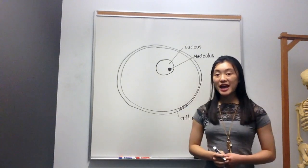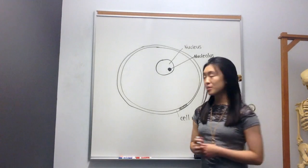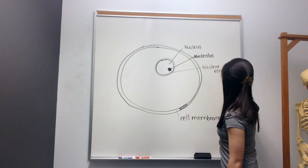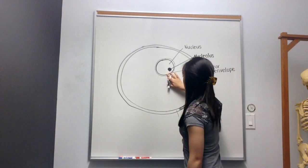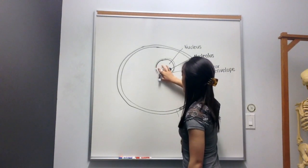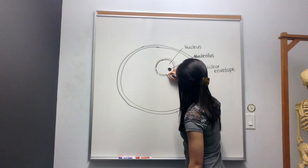Surrounding the nucleus, we have a membrane. The membrane is called the nuclear envelope. And within the nuclear envelope, we have some openings. These openings are called nuclear pores.